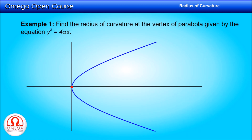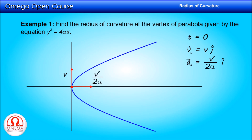We have to find the radius of curvature at the vertex, that is the (0, 0) coordinate. The value of parameter t is 0 at this position. So we can get the velocity vector of the particle at the vertex by putting t = 0 in the expression. This gives velocity vector = v ĵ. Also, the acceleration, independent of time, is v² / 2α î. You may have noticed the velocity at the vertex is along the y-axis and acceleration is along the x-axis. This means acceleration is perpendicular to the velocity, or acceleration is the radial acceleration. Now, the radius of curvature is the square of speed divided by the radial acceleration. Putting the values, we get r = v² / (v² / 2α). Simplifying, we get r = 2α. This is our answer.